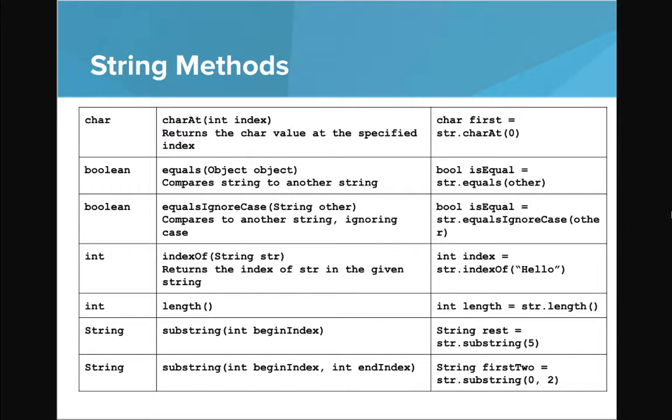Okay. So there's a lot of methods that strings have, and we're not going to go in depth on all of them, but we're going to highlight a few key ones. So the first one is charAt. And what that does is it returns the character value at the specified index. And so if I say char first equals str dot charAt zero.